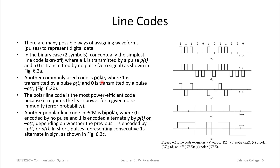Another commonly used code is polar, where a one is transmitted with a pulse p(t) and a zero is transmitted by a minus pulse or minus p(t). In the figure, notice that the ones produce a positive pulse, but whenever we have a zero, instead of no signal, we reverse the polarity of the pulse. This is very efficient — if you run it long enough and it's random enough, you end up with no DC power, making it more efficient than on-off coding.